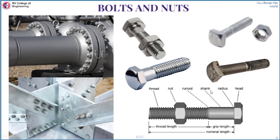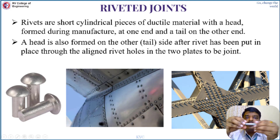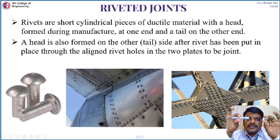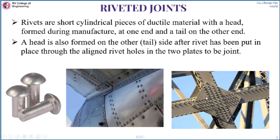The next topic is riveted joints. This is a small rivet. Rivets are used in various fields — aerospace for wing structures, bridges, lamp posts, and many other applications. Riveted joints are not temporary — they are permanent joints. The difference: a temporary joint means you can disassemble without breaking the fastener, as with bolt and nut. Whereas with riveting, you cannot disassemble the components without breaking the rivet — that is why it's called a permanent joint.